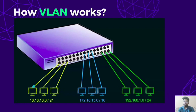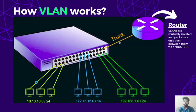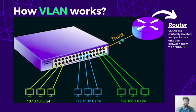Since all the devices are connected to the same switch, what if a device in one VLAN wants to communicate with a device in another VLAN? It is not possible directly, because each VLAN has a different IP addressing scheme — they belong to different networks. So we need a router to do this. The router is connected to a freely available port which carries traffic from all VLANs — that is why we call it a trunk port. VLANs are mutually isolated and packets can only pass between them via a router.